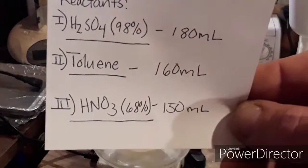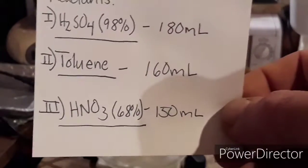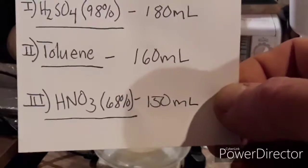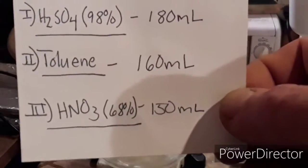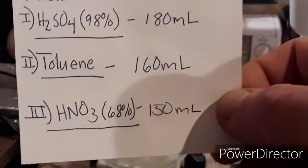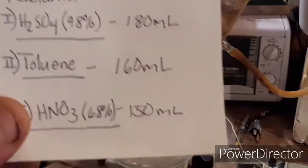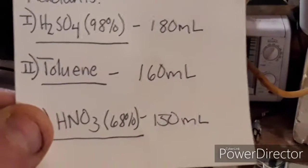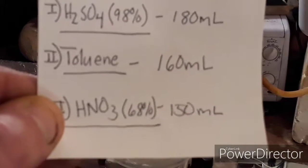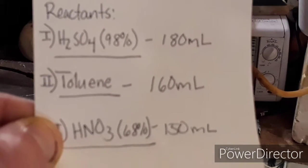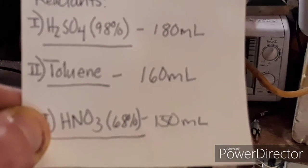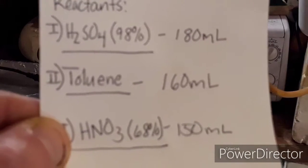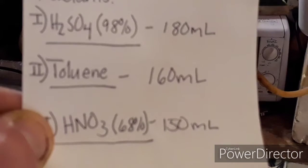You can use a higher concentration of nitric acid if you have it — it's not necessary, but you'll need to adjust the stoichiometry. If you don't adjust it, you'll just have excess HNO₃. After separating the product from the waste acids, I'm going to distill the acid to recover any unconsumed HNO₃ and strip water from the azeotropic H₂SO₄, since it's pretty precious and rather expensive.